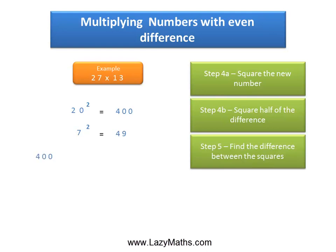And then the last step is simply to subtract 400 minus 49, and we get 351 as our final answer. So 27 times 13 equals 351.